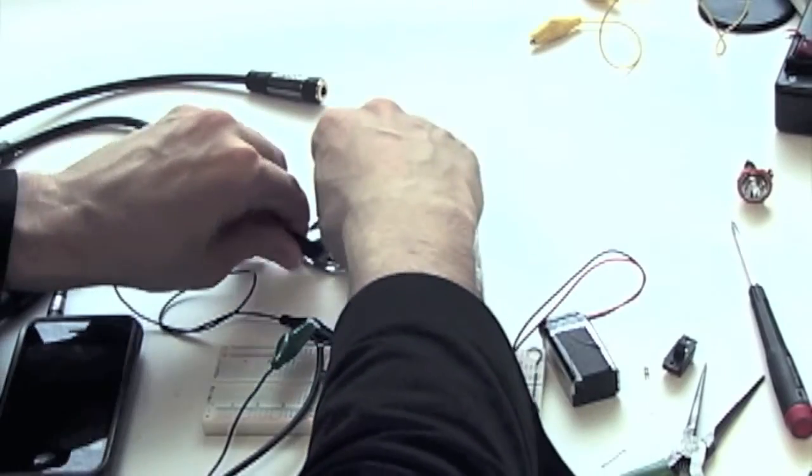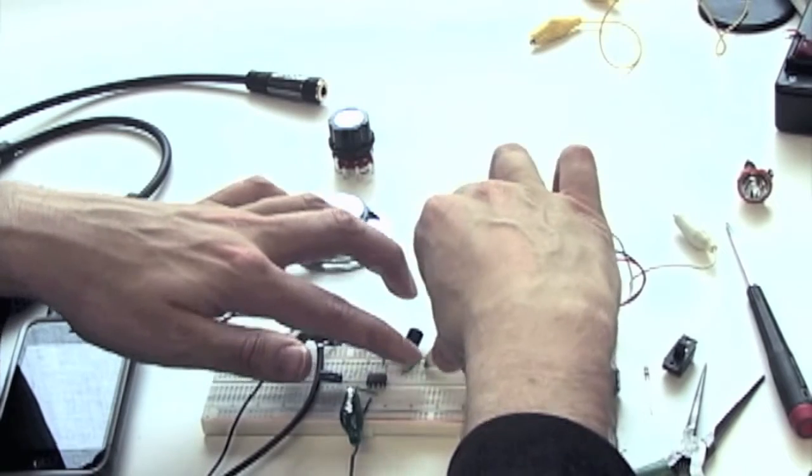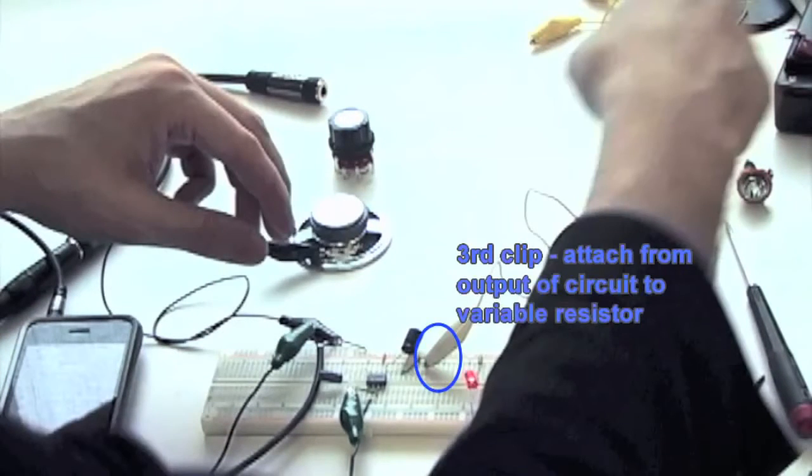Connect the other end of this black clip to one speaker terminal. We'll connect our output to the speaker by going through a variable resistor. This will give us a volume control.